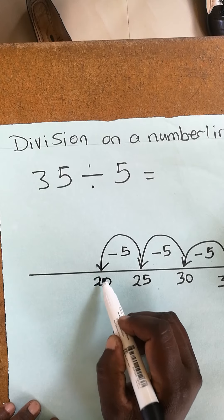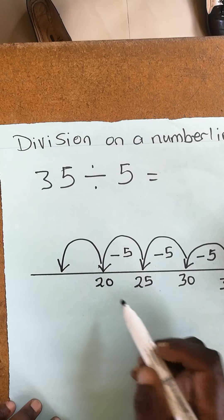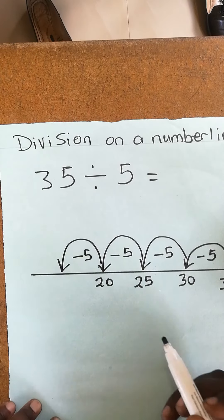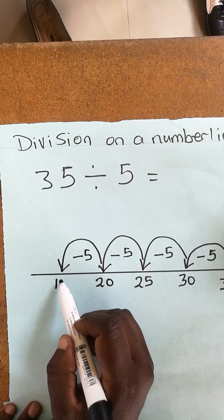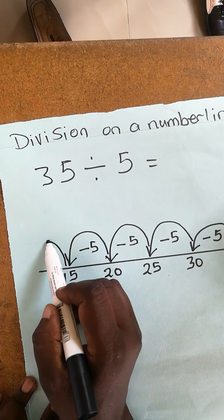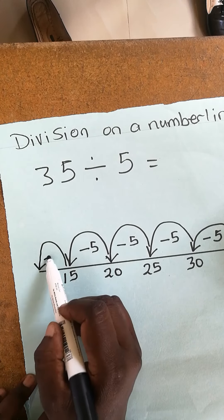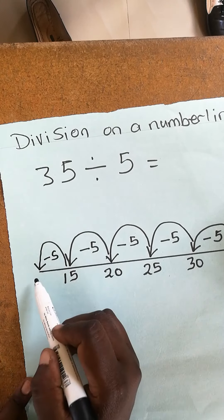You're not there yet. Take away 5 again. Take away 5 from 15, it's going to be 10.